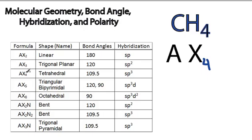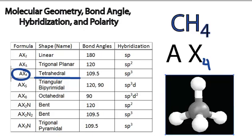As we go down the table, we see that AX4, right here, has a tetrahedral shape. That's going to look like this, right here. We have the Carbon in the center, and then we have these Hydrogens on the outside. The bond angle is 109.5, and it's sp3 hybridized.